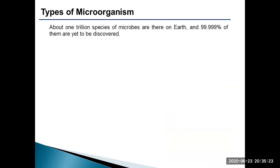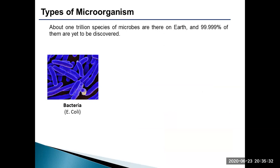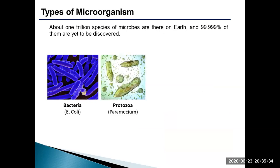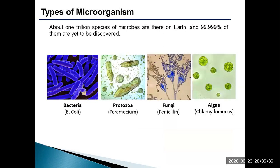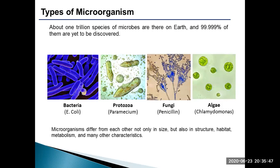A variety of microorganisms exist in nature as well as within our body. They include bacteria, protozoa, fungi and algae. A representative image of each microorganism is shown here. They do not only vary in size but also in structure, habitat, metabolism and so on.